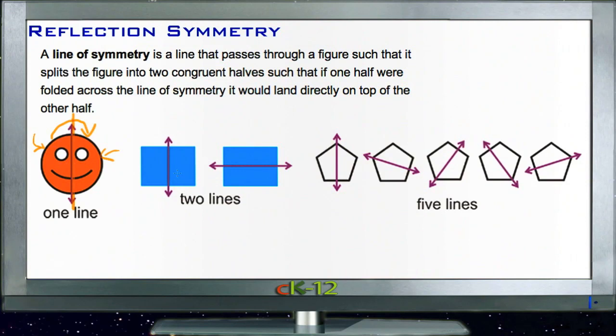The rectangle, however, has two lines of symmetry because I could either draw it down top to bottom and have it be the same on left and right, or I could draw it left to right and have it be the same top to bottom.